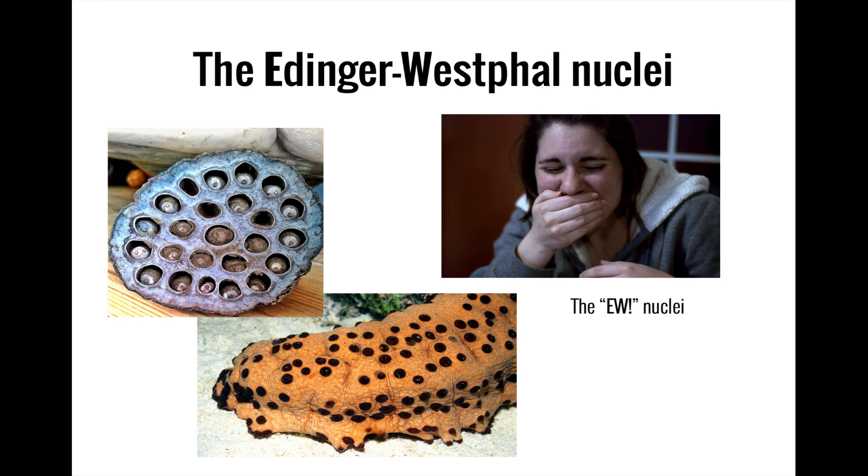You can remember the role that the Edinger-Westphal nuclei play in constricting the pupils by thinking of them as the eunuclei. When you look at something disgusting, you'll probably say eew and not want to look at it anymore. The eunuclei then reduce the size of your pupils so that less of that disgusting light is entering your eye.